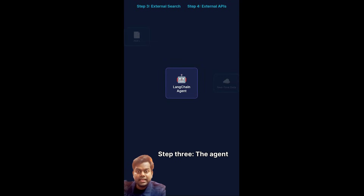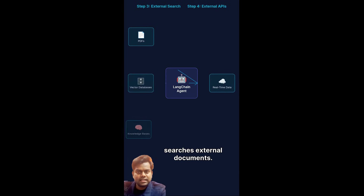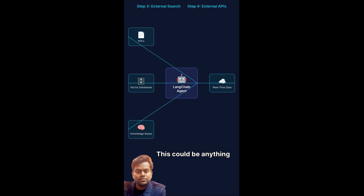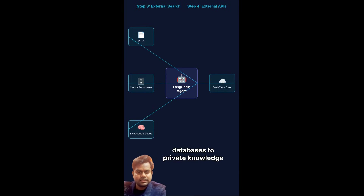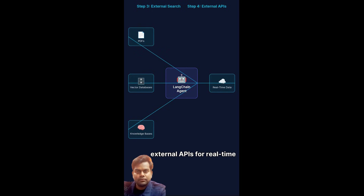Step 3: the agent searches external documents — this could be anything from PDFs and vector databases to private knowledge bases. Step 4: it calls external APIs for real-time data or specific services needed for the task execution.